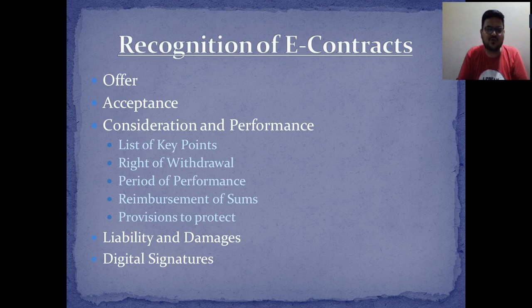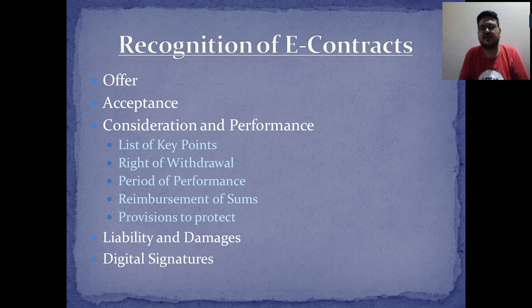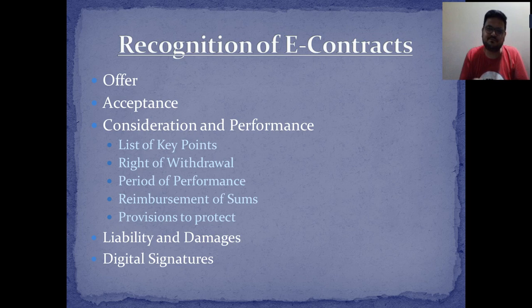Regarding how e-contracts are recognized, the same pattern as regular contracts applies. There must be an electronic offer — for example, I offer to sell my laptop to you for five thousand — and you electronically accept it. There is a consideration, a fixed amount, and a performance obligation. Purchasing anything from Amazon, Flipkart, or Snapdeal is exactly an example of e-contracts. So: electronic offer, electronic acceptance, electronic consideration, and performance.